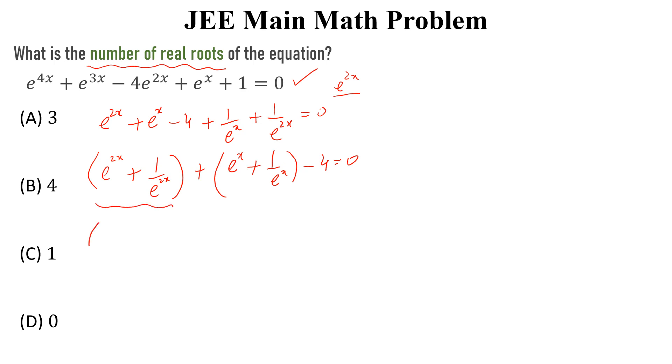Now, we can write this as e to the power x plus 1 over e to the power x whole square minus 2 plus e to the power x plus 1 over e to the power x minus 4 is equal to 0.